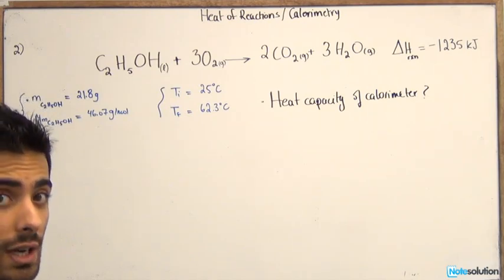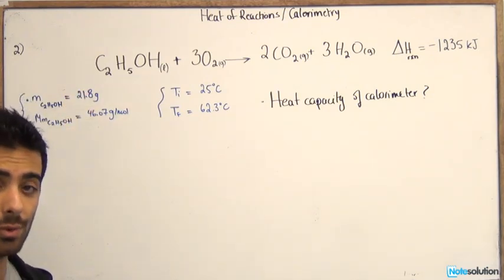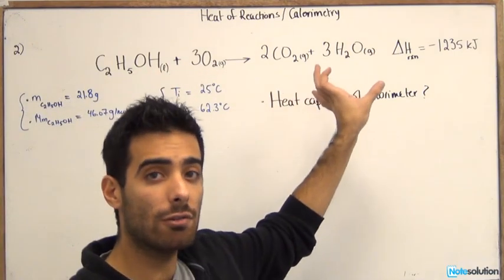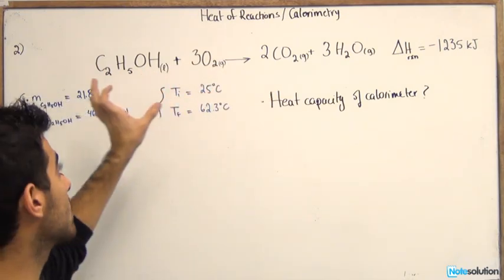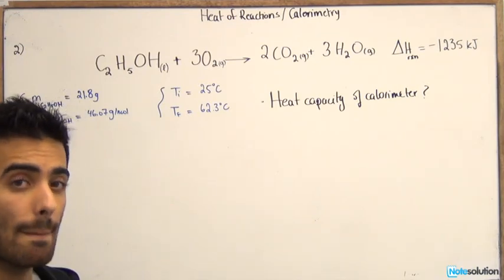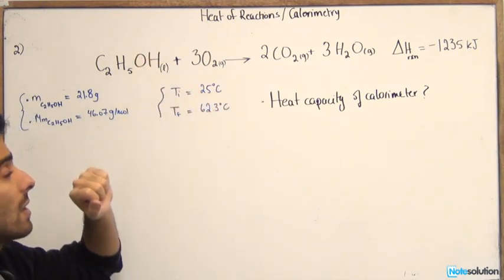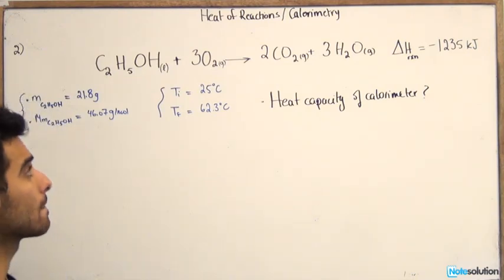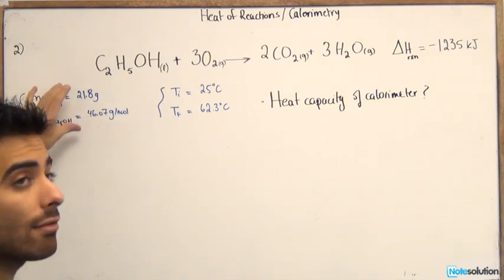Well, the first thing we need to do is find how many moles of ethanol were reacted or were used in this reaction. This formula is a general formula of the combustion of ethanol, but it doesn't actually give you the amount of heat released for a specific number of moles. This tells you that for every mole of ethanol you get negative 1235 kilojoules. So in this experiment we have a specific amount of moles that we need to find out from the given information.